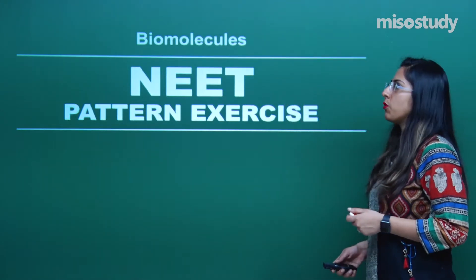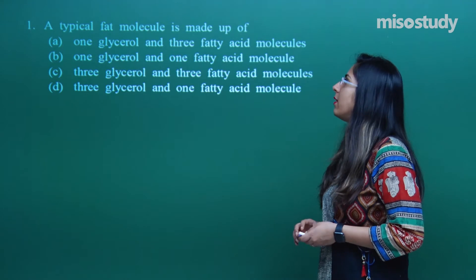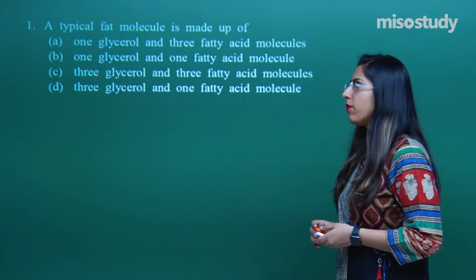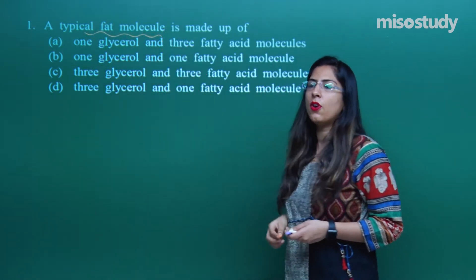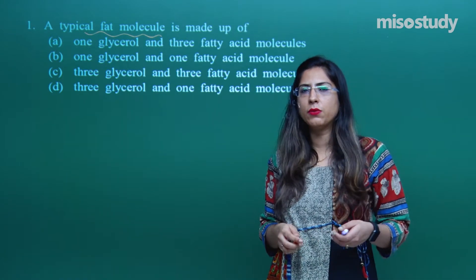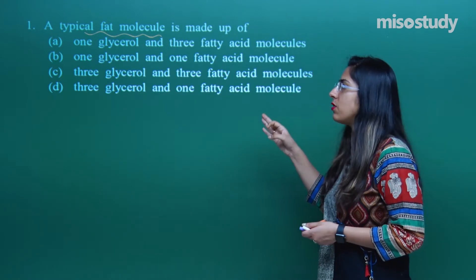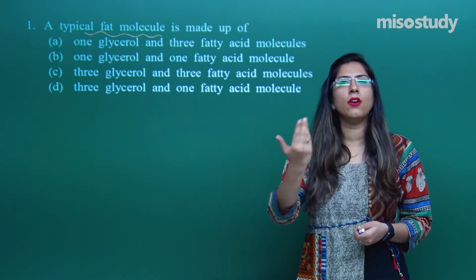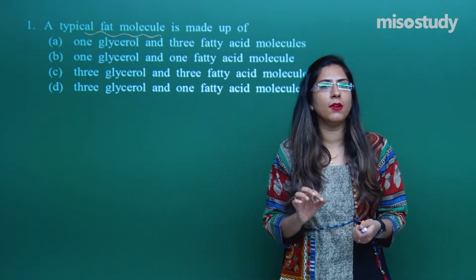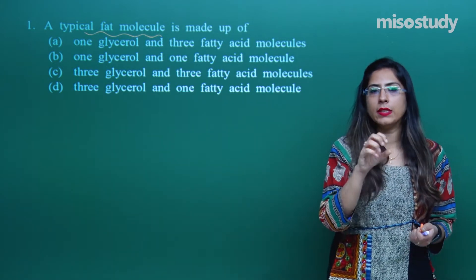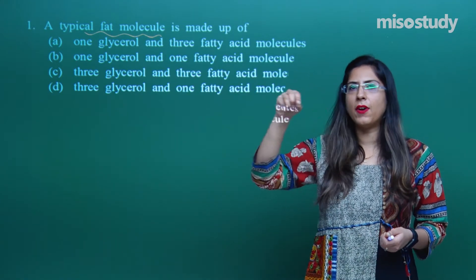Let us look at the first question: a typical fat molecule is made up of. Whenever we see the structure of a fat molecule, we can see that one glycerol molecule is there, and each glycerol molecule is connected with three fatty acid chains. The three fatty acid chains attached may be saturated or unsaturated. One glycerol is connected to the fatty acyl chain.